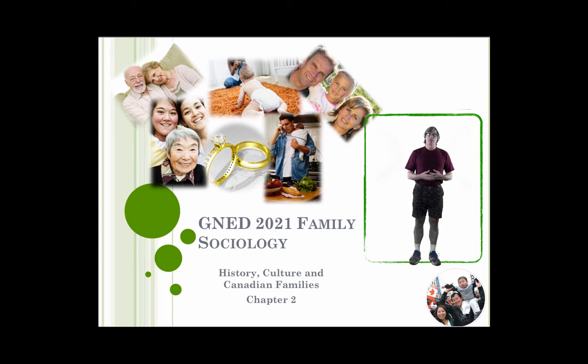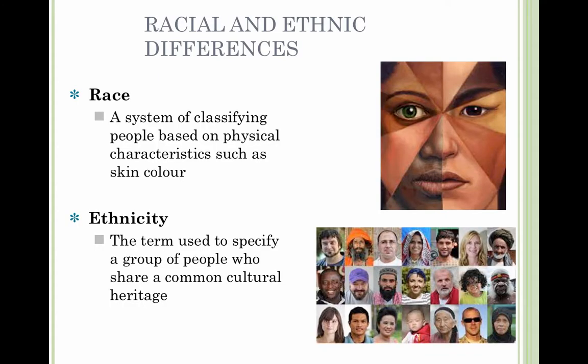We'll carry into this chapter looking at race and ethnicity. As you can see, we've got two definitions — one of race and one of ethnicity. Where you're looking at race, you're looking at physical characteristics such as skin color. Whereas ethnicity, you're looking at cultural heritage — where you're from, where you've been raised, and different parts of geography.